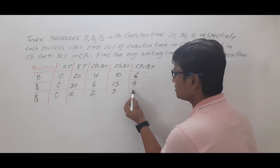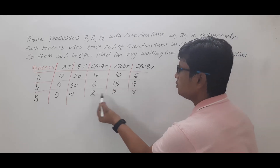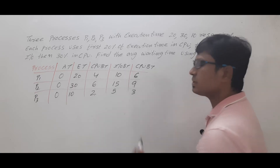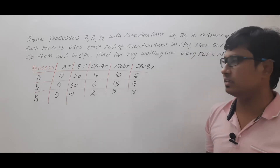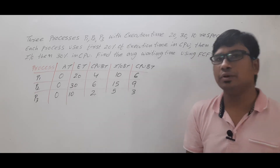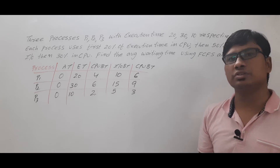For P3: 20% of 10 is 2, 50% of 10 is 5, 30% of 10 is 3. Verify: 2 plus 5 is 7, plus 3 is 10.